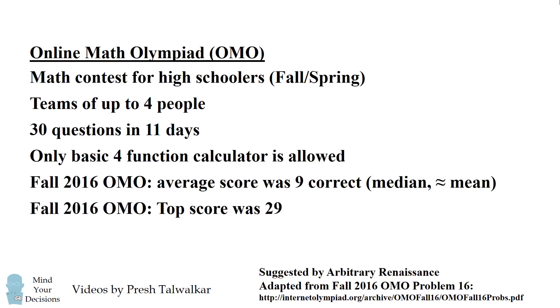So even these very talented high school students who took the test were only able to solve on average about one-third of the questions. The very top score was 29, which means this person answered almost all the questions — truly incredible because these are fairly difficult questions. I've reworded problem 16 from the test as follows.